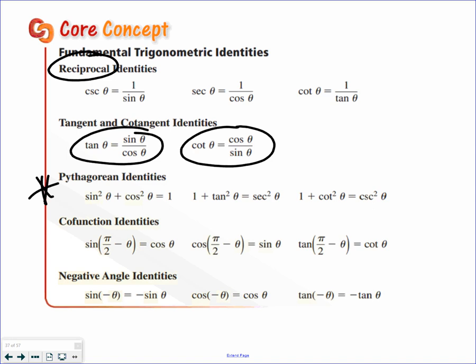Now for the Pythagorean identities. Sine squared plus cosine squared equals 1. 1 plus tangent squared equals secant squared. And 1 plus cotangent squared equals cosecant squared. You can manipulate this too, like secant squared minus tangent squared equals 1, or cosecant squared minus cotangent squared equals 1. Those are the Pythagorean identities.